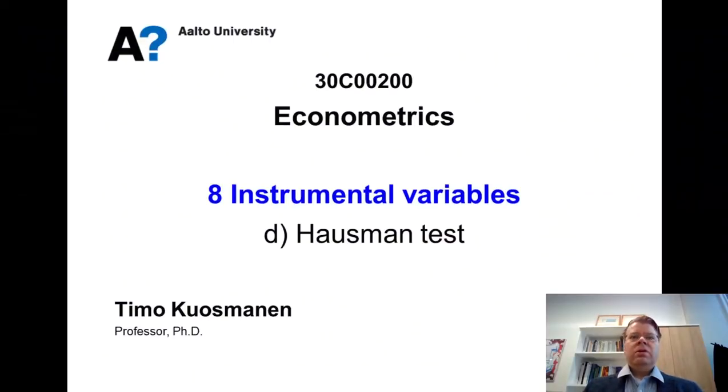As the fourth and final lesson on instrumental variables, we will consider the Hausman test, which is a useful specification test in the context of instrumental variables, but we will also later utilize it in the context of panel data.